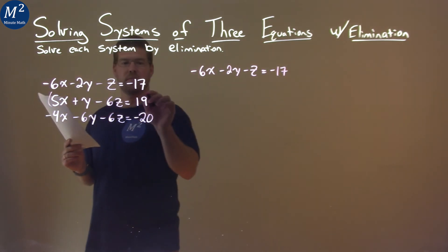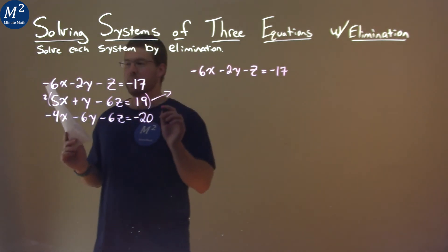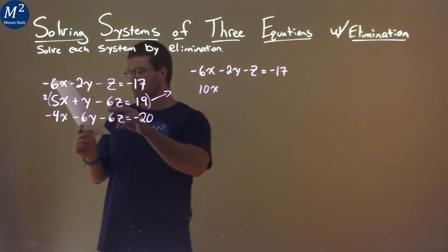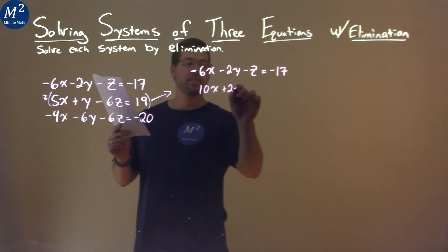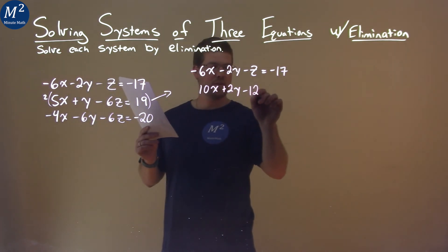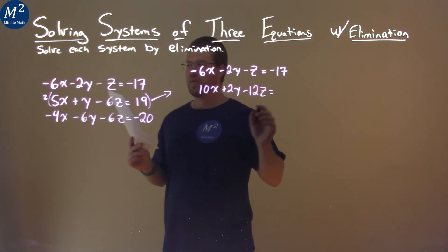The second equation here, I'm going to multiply that by 2. What do we get? 2 times 5x is 10x. 2 times y is 2y. 2 times negative 6z is negative 12z, and 2 times 19 is 38.